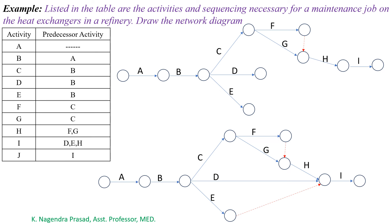So the next activity is J, and it starts after completion of I. So let's draw activity J. Here, J is the terminal activity. So next we have to give the numbers for all the events, and numbering should be higher at the head of the activity. So it should be like this — we have to give the higher number at the head of the activity. So this is the solution.